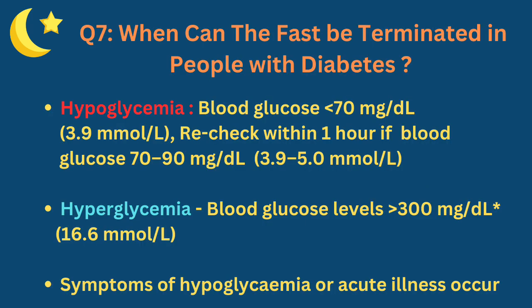When can the fast be terminated in people with diabetes? If someone has hypoglycemia with blood glucose less than 70 mg per deciliter during fasting, they should eat or drink something and repeat the sugar test after one hour to make sure it is returning to normal. The fast should also be broken if sugar is more than 300 mg percent, or if there are symptoms of hypoglycemia or acute illness.